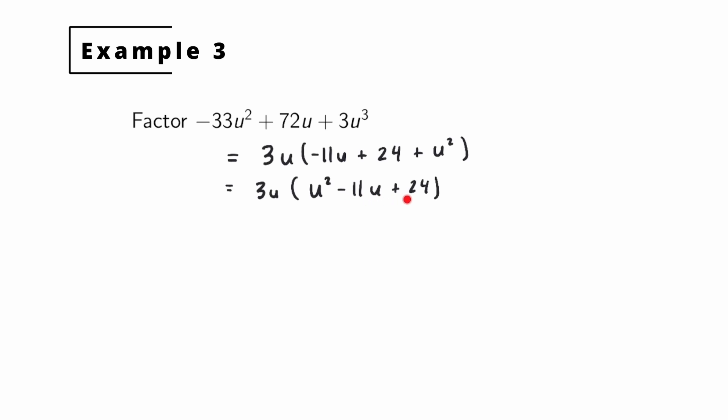Okay now we want to factor this trinomial. So again how will it factor? It's going to be 3u and then we want to write out our two binomial factors. Fill them out like this and then we fill in the blanks. So we're looking for two numbers who multiply together to give me 24 and whose sum is -11.